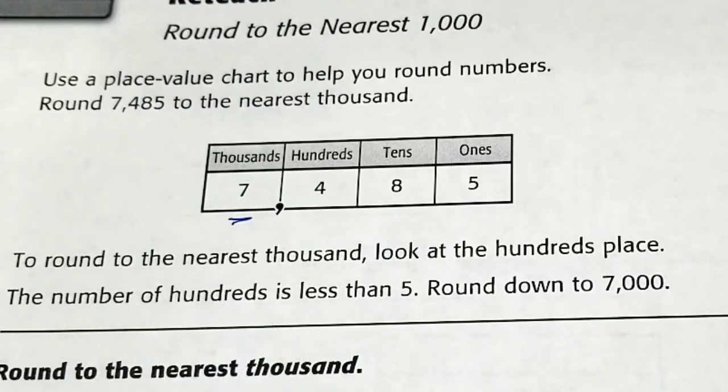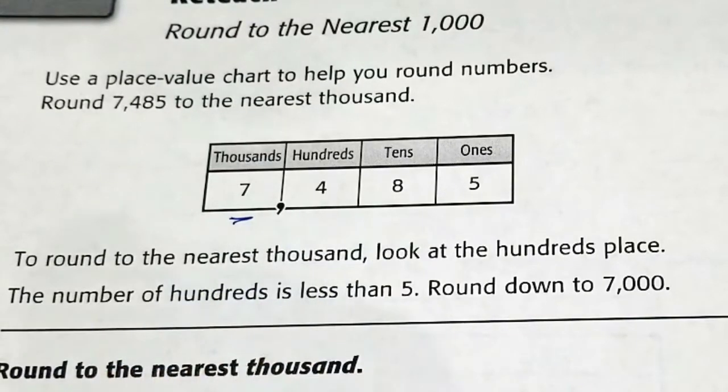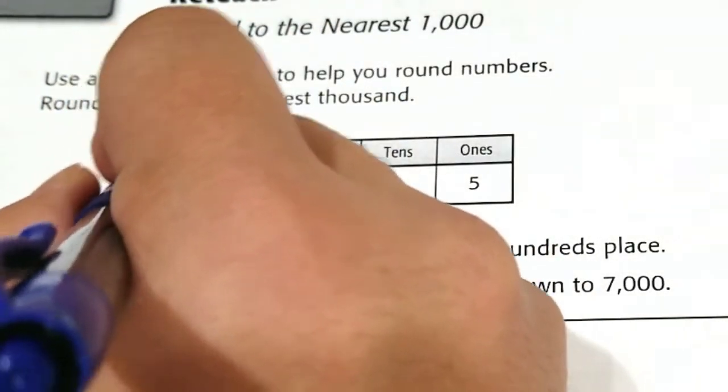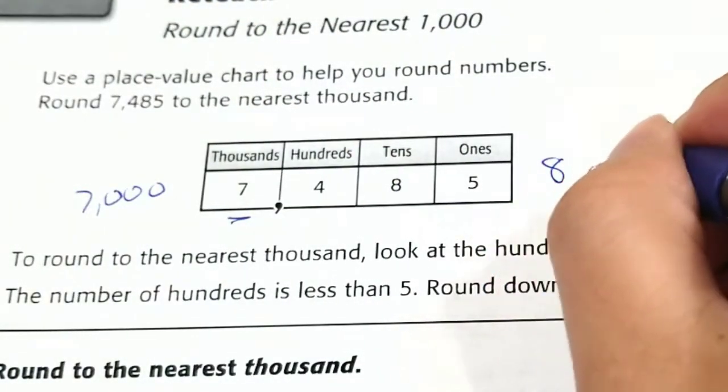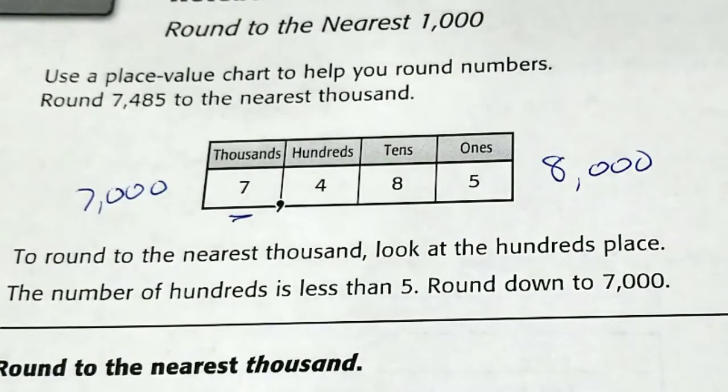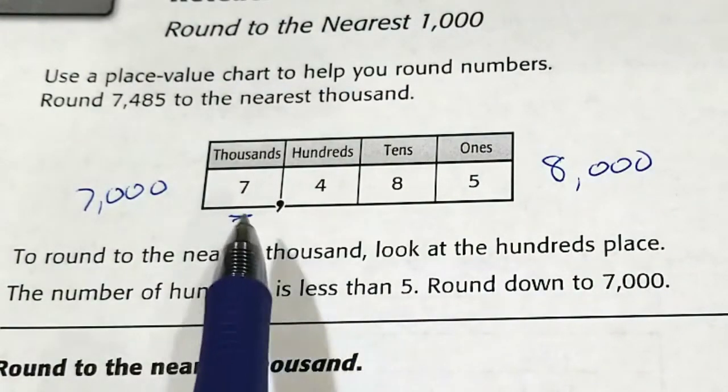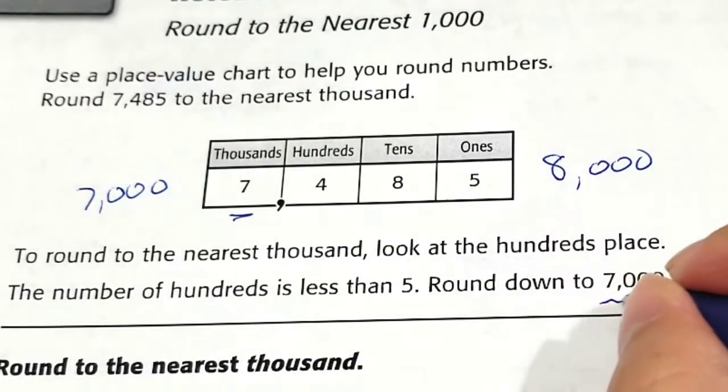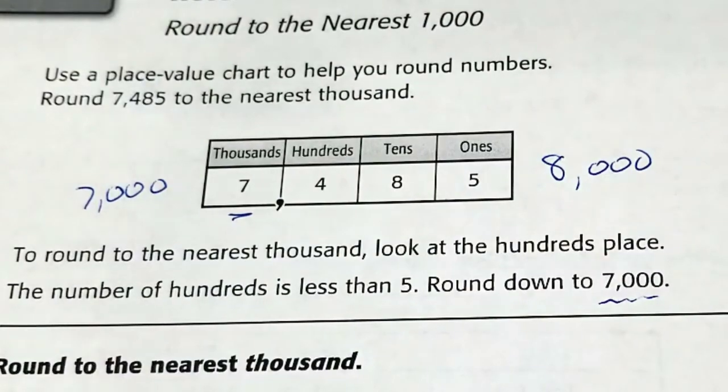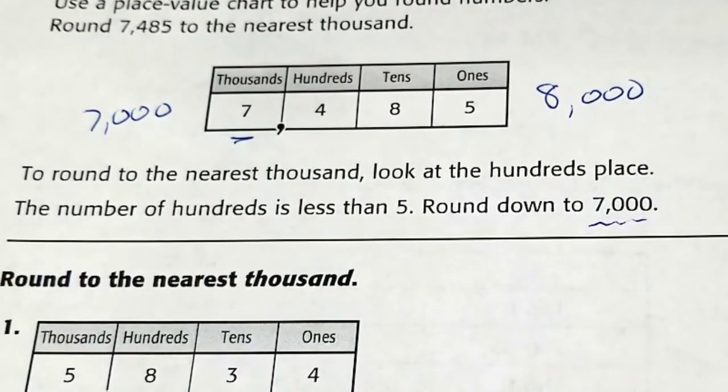So by rounding this to the thousands place we want to know: is 7,485 closer to 7,000 or is it closer to 8,000? And so the answer is, because this is less than 5, we round down. Everything over here turns into 0. It is closer to 7,000 than it is to 8,000. Okay, so that's how you round to the nearest thousand.